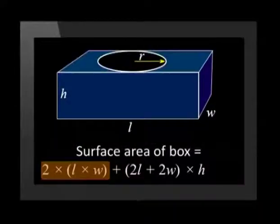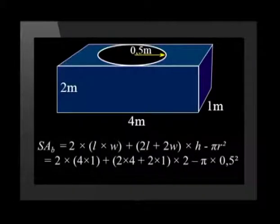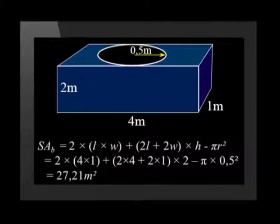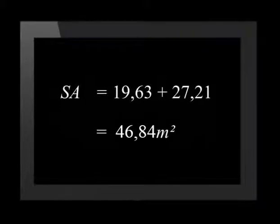Now let's calculate the surface area of the other solid minus the base of the cylinder. The surface area of the box is calculated by 2 times the area of the base plus the perimeter of the base times the height of the prism. But we must also remember to subtract the area of one circle that is going to be painted on the box. Substituting in the given values, we get 2 times 4 times 1 plus the sum of 2 times 4 and 2 times 1 multiplied by 2, minus pi times 0.5 squared. The exposed surface area of the box works out to be 27.21 meters squared. So the total surface area of this solid is 19.63 plus 27.21, which is equal to 46.84 meters squared.